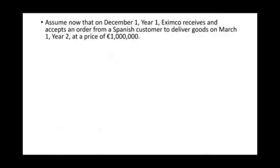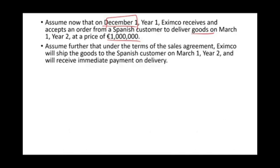The best way to illustrate this, as with all hedging concepts, is to work an example. Assume it's December 1st, year 1, and Eximco received and accepted an order from a Spanish customer to deliver goods on March 1st at a price of 1 million euros. We signed the contract and committed to deliver goods, and they're going to pay us 1 million euros on March 1st. We don't have to deliver anything until March — that's when we receive the money. Under the terms of the agreement, we ship the goods on March 1st and receive payment immediately.